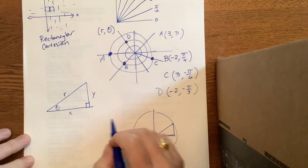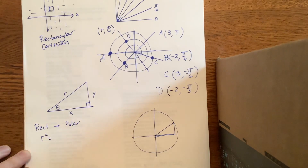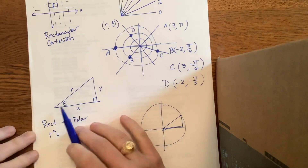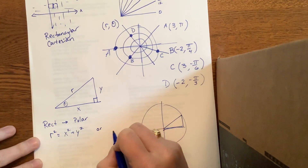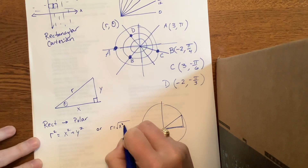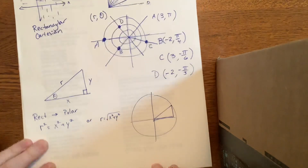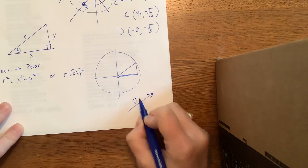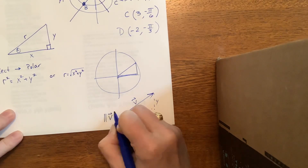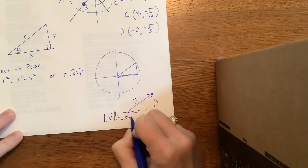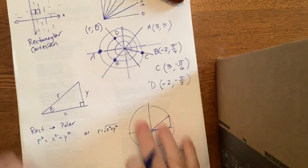There's a box on your paper about going from rectangular to polar. r² = x² + y² — that's the Pythagorean theorem. So r = √(x² + y²). Hopefully you recognize this: when we solved vectors, the magnitude of vector v with x and y components is equal to √(x² + y²). They behave the same way.